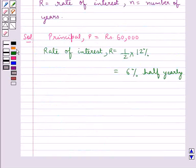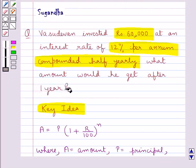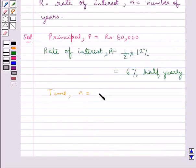And then, the time n is equal to 1 year, which is equal to 2 half years. So, we have n is equal to 2.